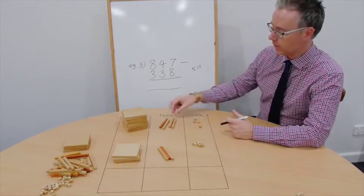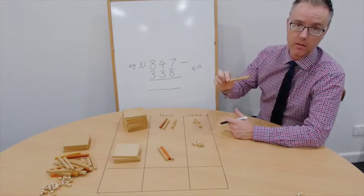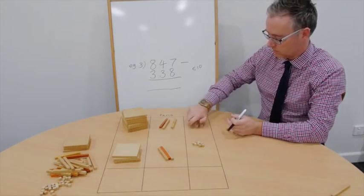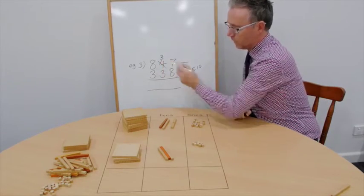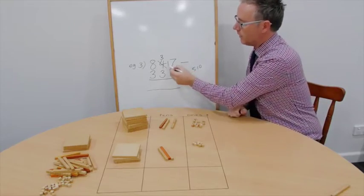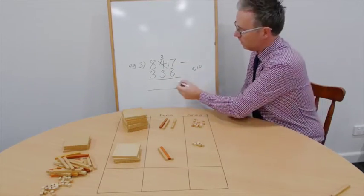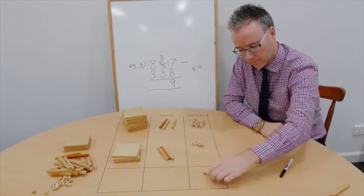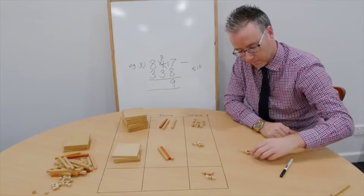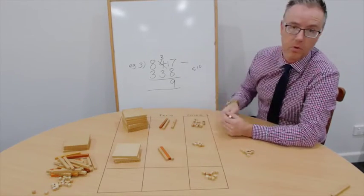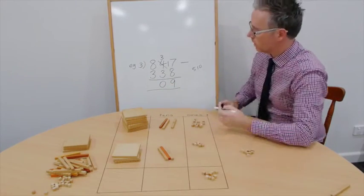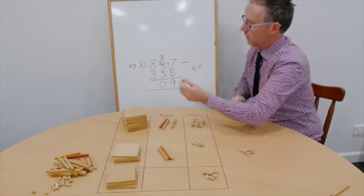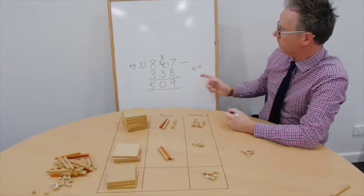7 take away 8, we can't do. So we need to borrow a 10, trade it for 10 ones. We now have 3 tens and 17 ones. 17 take away 8, 9. 3 take away 3, or 3 tens take away 3 tens. 0. And 8 take away 3 is 5. I've run out. But, the answer is 509, which is spot on.